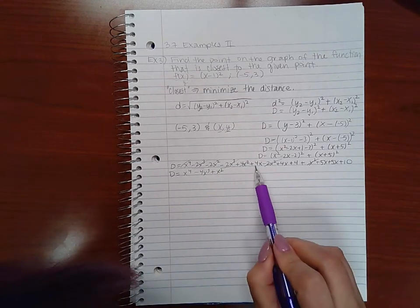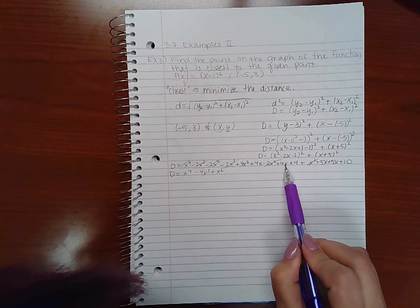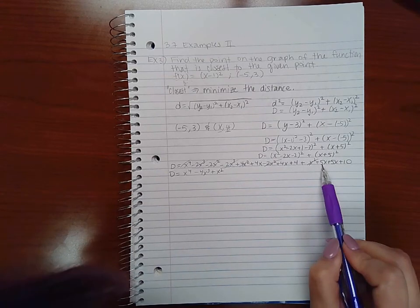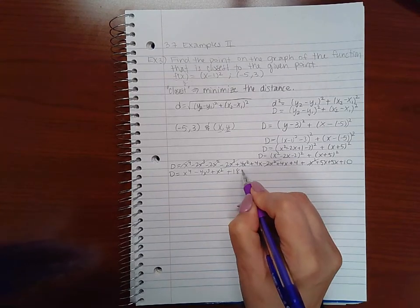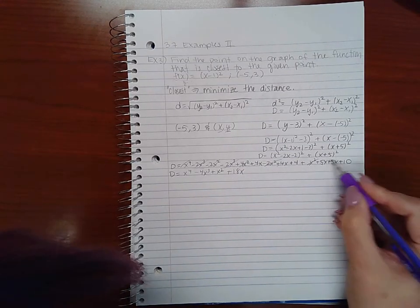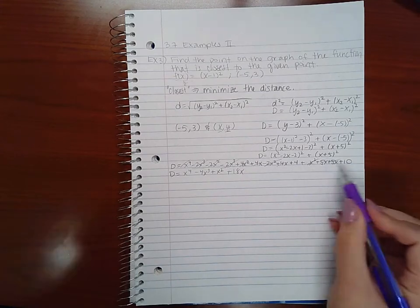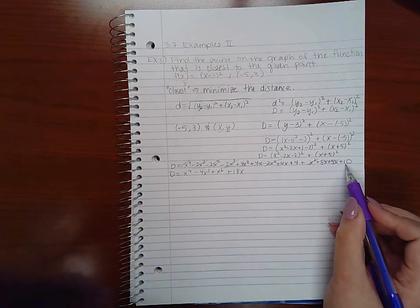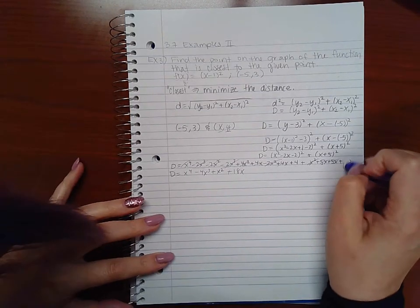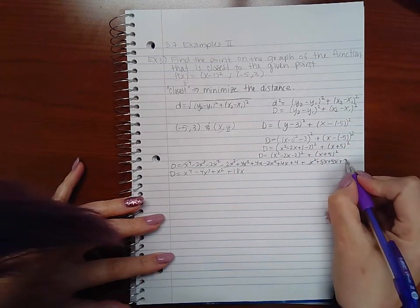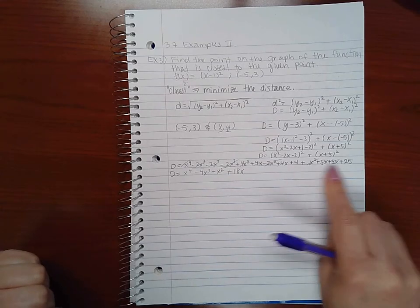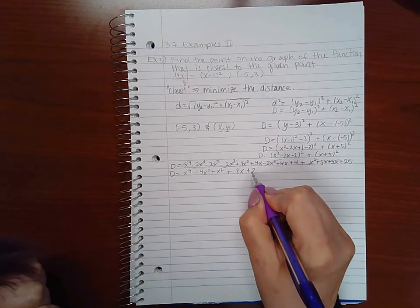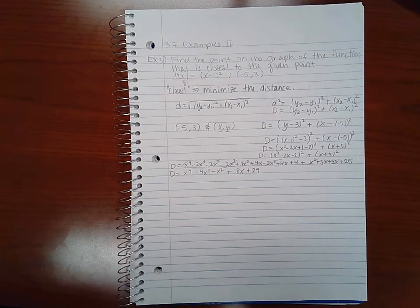Then I have 4x plus 4x is 8x plus 5x is 13x plus 5x is 18x. That takes care of all the x's. Then 5 times 5 is 25, so I end up with my constants 4 plus 25 which is 29.